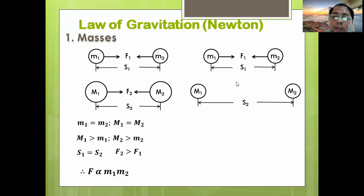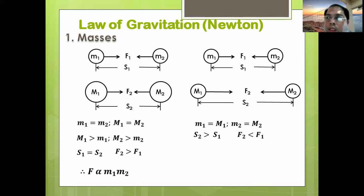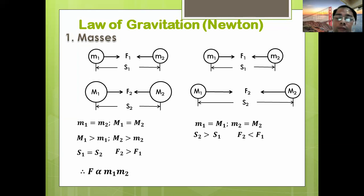Supposing the masses are equal in dimension, increasing the distance means F2 will become lesser. Therefore, if we try to move objects further apart, they will tend to have lesser gravitational force. That is the same thing we notice — if an object is further away from the Earth, the pull of Earth's gravity gets lesser and lesser, up to a point where you may not feel the gravitational pull anymore. There is a distance from planet Earth where you become weightless — a gravity-free environment.